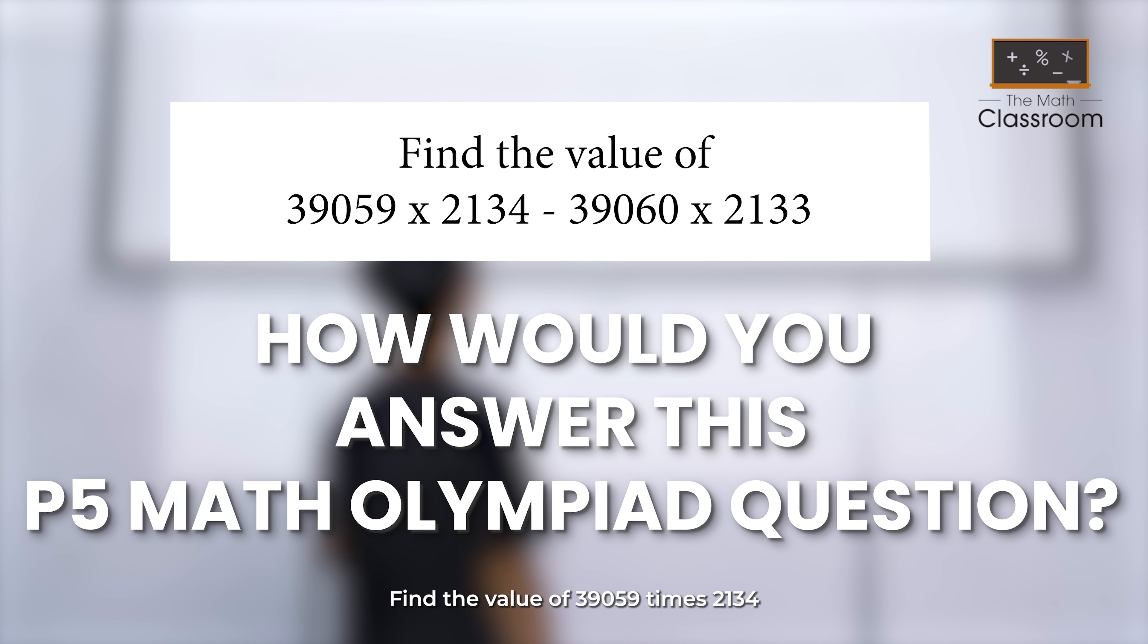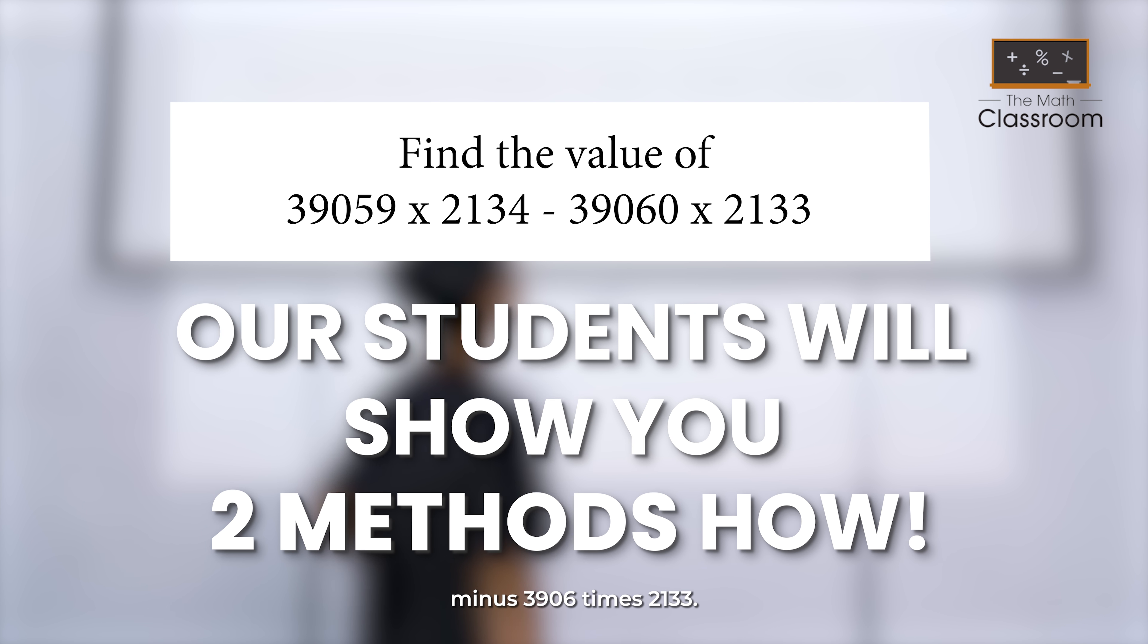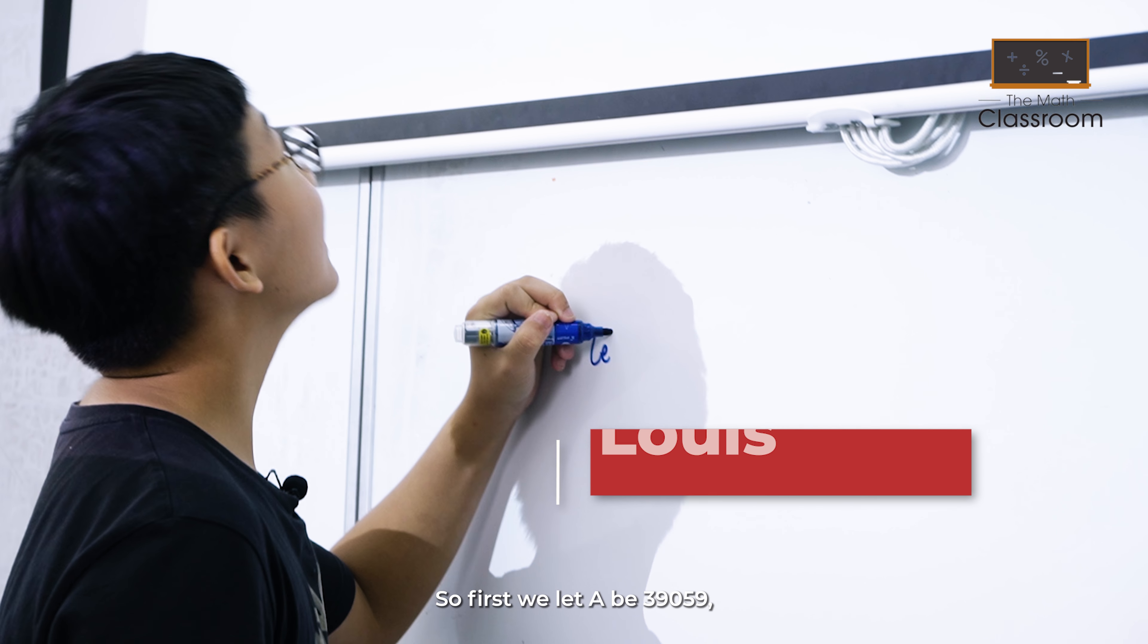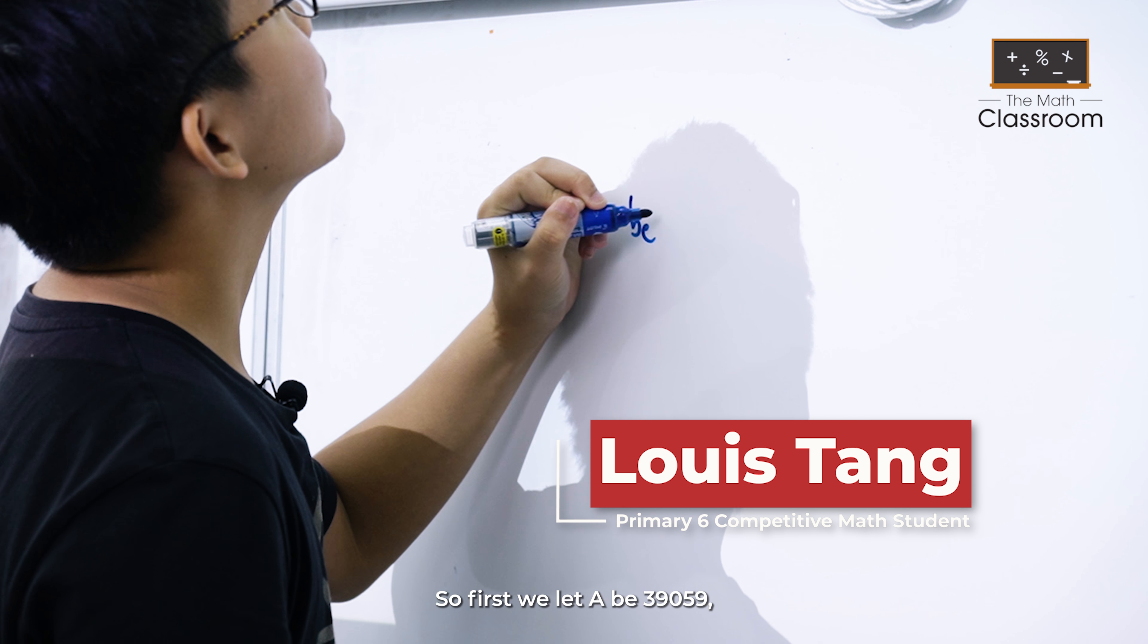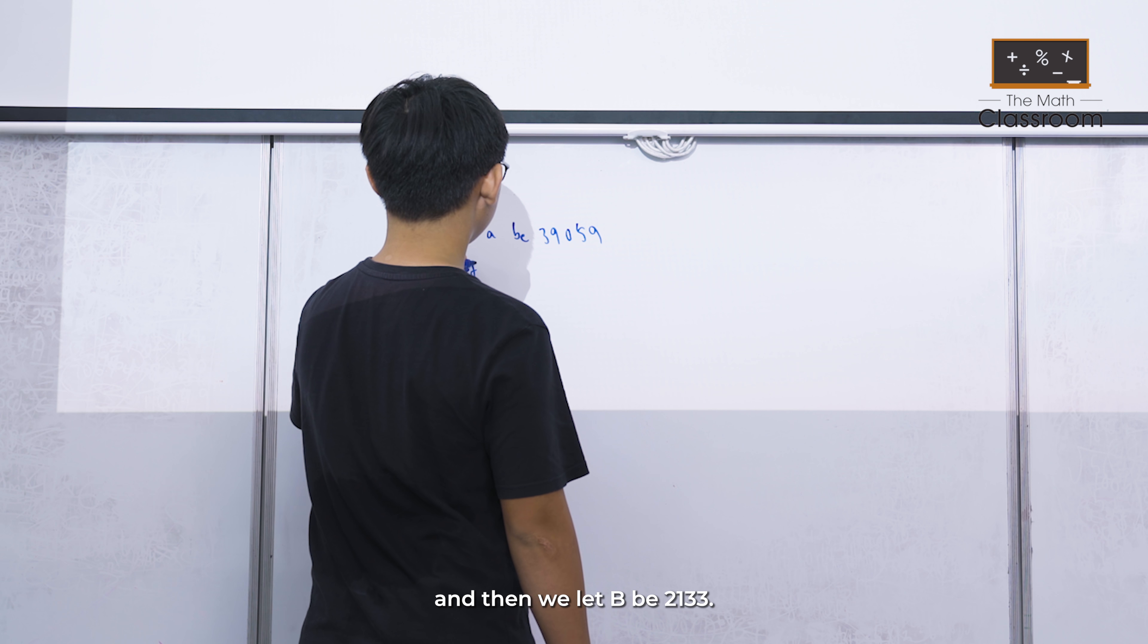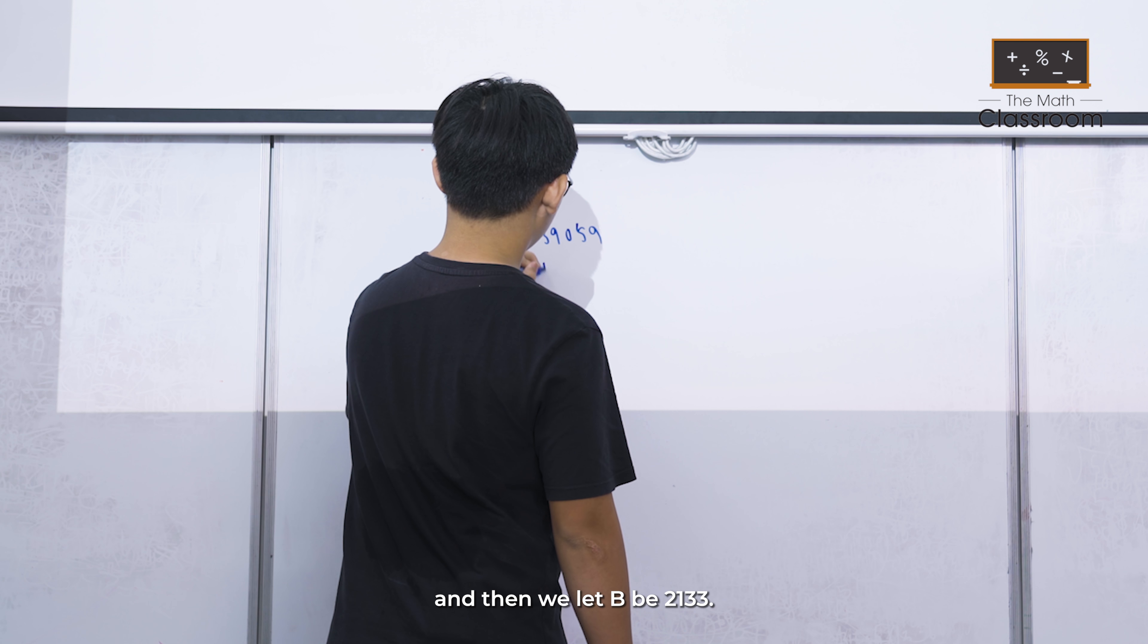Find the value of 39059 times 2134 minus 39060 times 2133. So first we let A be 39059 and then we let B be 2133.